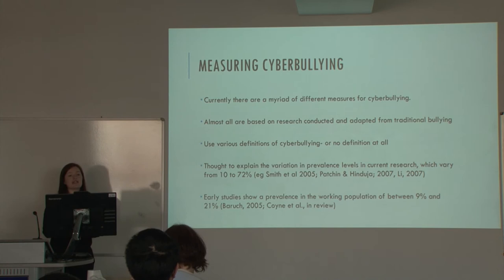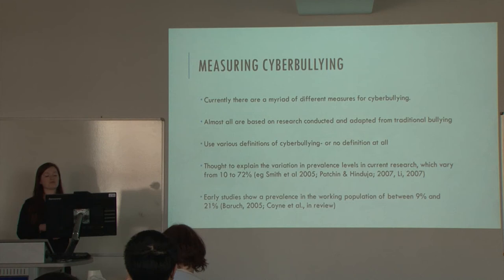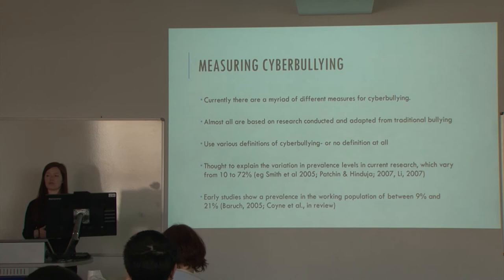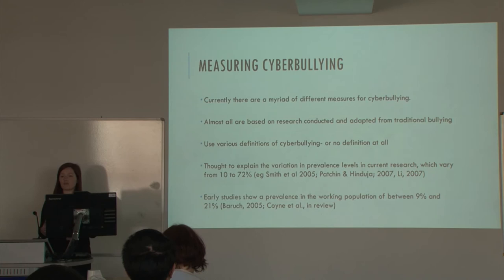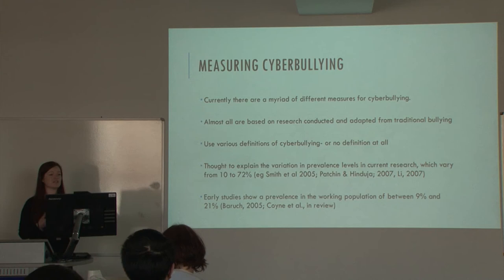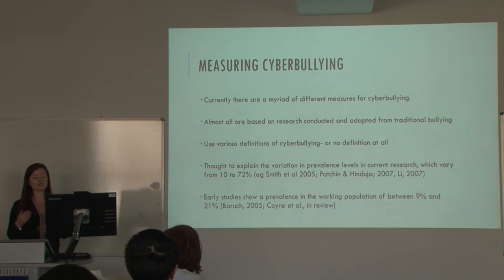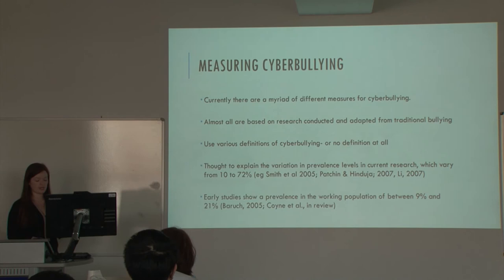Currently there's a myriad of definitions for cyberbullying, resulting in a range of different measures. Almost all of these measures are based on research adapted from traditional bullying, and as we've seen, the definition doesn't necessarily transfer online — so why should the measures transfer online too? This is thought to explain the vast differences in prevalence rates: ranging from 10% to 72% in adolescents, and from 9% to 21% in early workplace cyberbullying research. So there's a real need to pin down what exactly cyberbullying is and how we can measure it.